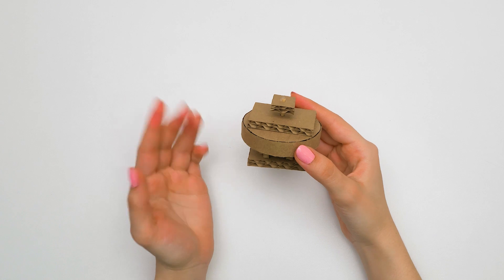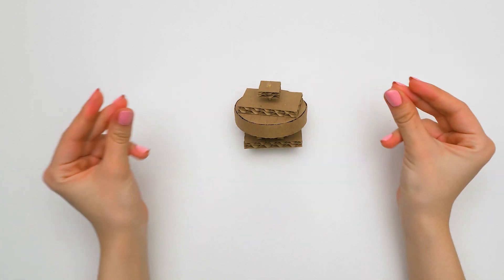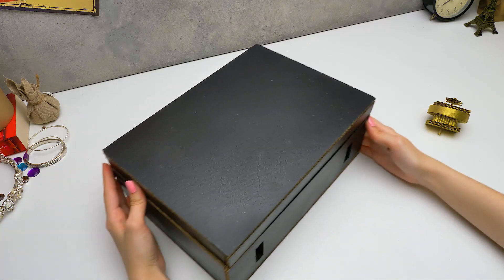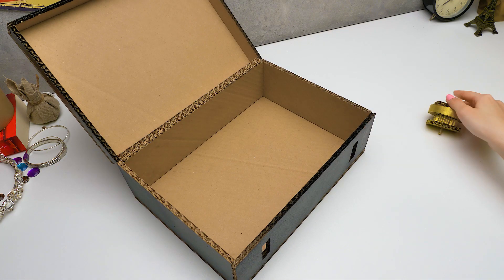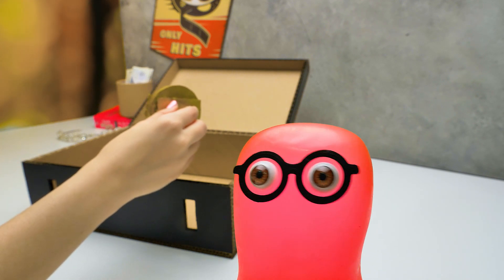Oh, I almost forgot about this little square. It goes right here. Now we need to secure this whole construction with some glue. Be very careful. And done. But we also need to paint this piece. Guys, don't forget to make a small cut for the lock. And done. How's it going, Sammy? Did you manage to repeat what I did? Are you kidding me? I finished faster than you.